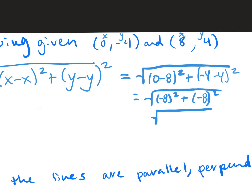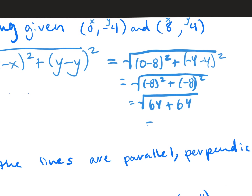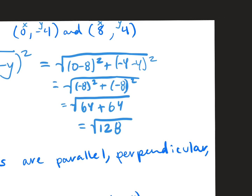8 squared is 64 plus 8 squared is 64, and 64 plus 64 is 128. Some of us got here, but then when we had to break down, we didn't know what to do. You have to always break down into a non-perfect and perfect square.